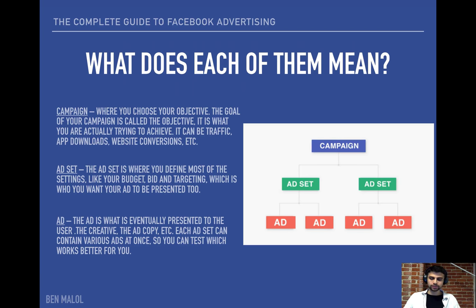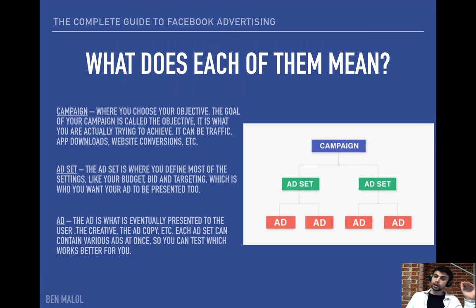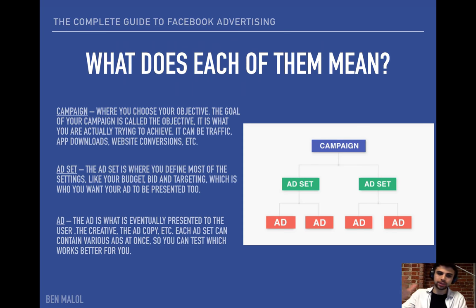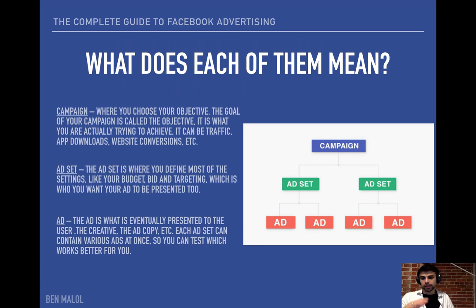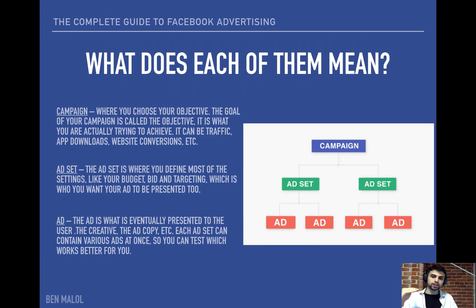The campaign is where you choose your objective — your goal — which can be leads, video views, or website conversions. You can decide one objective per campaign. On the ad set level, that's where all the actual work is done: the targeting, budgets, bids, placements, mobile, desktop, whether you target males or females. Even though you pick an objective at the campaign level, you can optimize for something different at the ad set level. The ad level is the front end — what the user sees: the ad copy, images, everything on their feed.